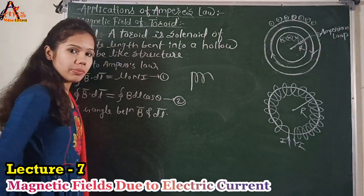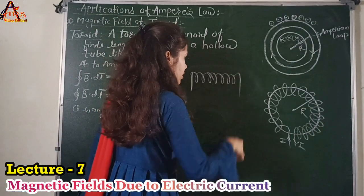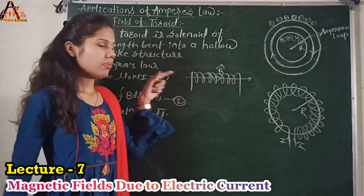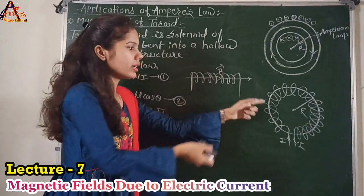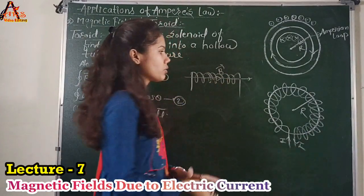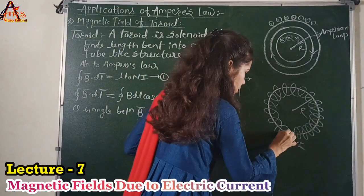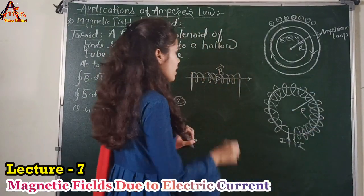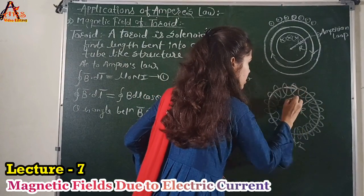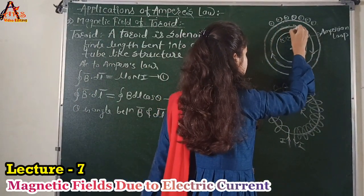Theta is the angle between B-vector and dl-vector. You have to decide that angle theta and accordingly proceed with the derivation. We have proved that the magnetic field along the axis of a solenoid is uniform — that was the direction of B-vector along the axis. Now, this solenoid has been bent to form a toroid. So the magnetic field is along the axis of the solenoid, which after bending becomes the axis of the toroid. In your figure, the direction of B-vector is along this circular axis of the toroid.